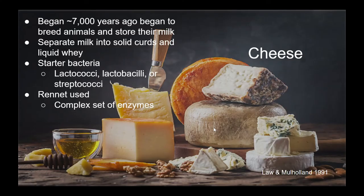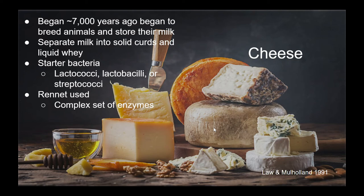Cheese making is different than alcohol production. Instead of using alcohol fermentation, cheese uses lactate fermentation. Cheese production began about 7,000 years ago when humans started to cultivate livestock in order to preserve the milk they were getting from them. One specific step unique to cheese making is separating the milk into solid curds and liquid whey. The main microbe used in cheese production is bacteria. Common bacteria are lactococci, lactobacilli, and streptococci. The bacteria is added and converts the milk's sugars into lactic acid. In some cases, enzymes are added, but are usually produced by the bacteria. These chemical reactions play a large role in the flavor of the cheese.